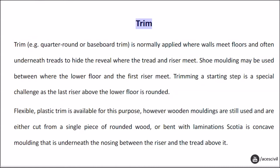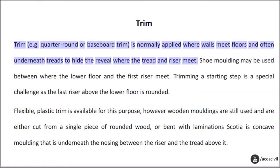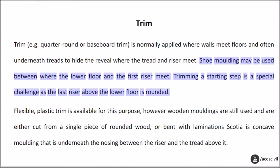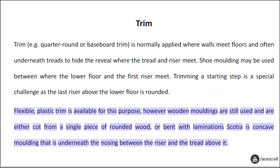Trim — e.g. quarter round or baseboard trim — is normally applied where walls meet floors, and often underneath treads to hide the reveal where the tread and riser meet. Shoe molding may be used between where the lower floor and the first riser meet. Trimming a starting step is a special challenge as the last riser above the lower floor is rounded. Flexible plastic trim is available for this purpose; however, wooden moldings are still used and are either cut from a single piece of rounded wood or bent with lamination. Scotia is a concave molding that is underneath the nosing between the riser and the tread above it.